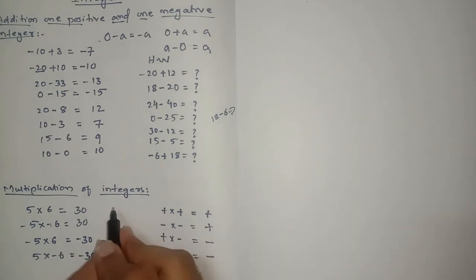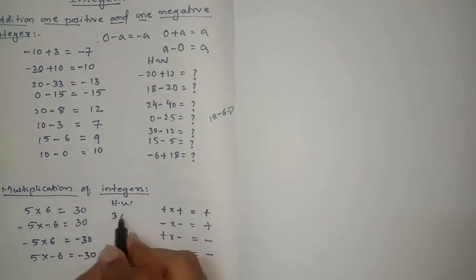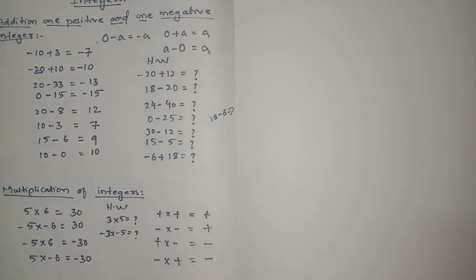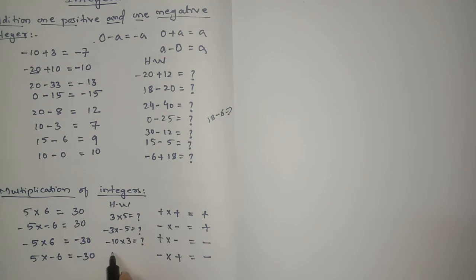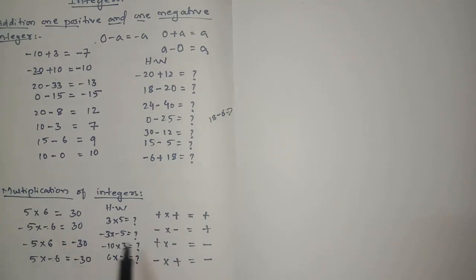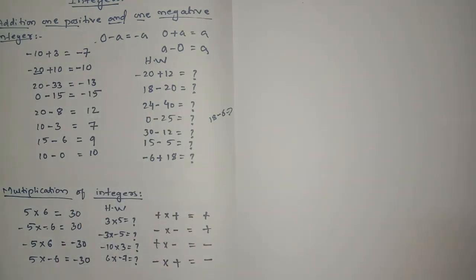Here is your multiplication homework: 3 into 5; minus 3 into minus 5; minus 10 into 3; and 6 into minus 7. I hope you understood the addition of one positive and one negative integer, and multiplication of integers. Solve these at home. Don't forget to like, share, and subscribe to the channel Tech Mathematics. Thank you for watching.